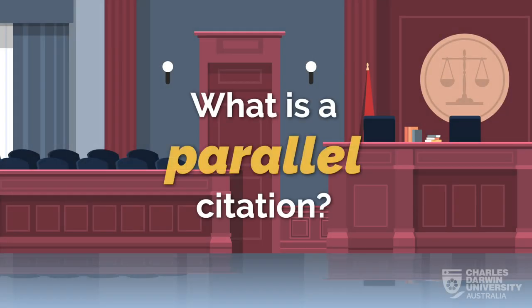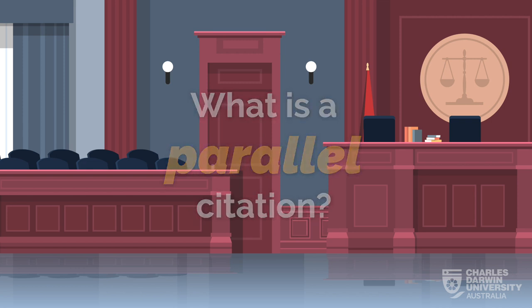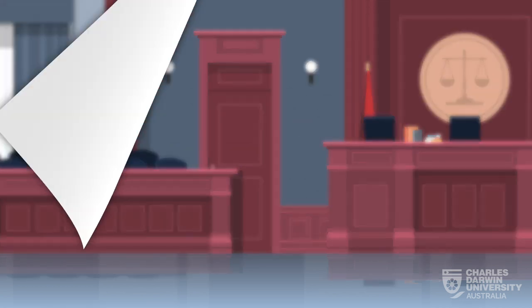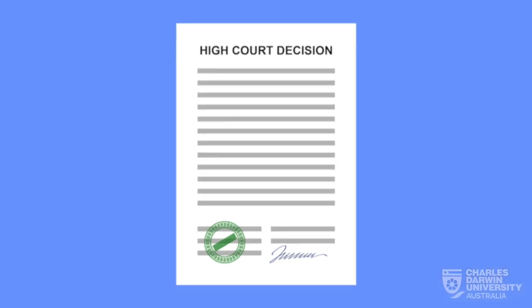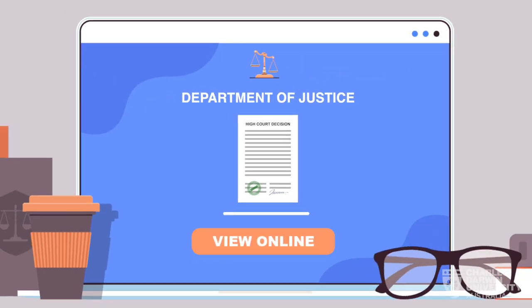When a case has a written decision, it can be published in lots of different places. For example, when the High Court publishes a decision, it's usually available shortly on their website.